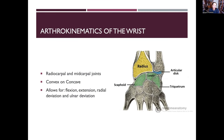The arthrokinematics of the wrist are important for joint mobilization. The carpal bones create a convex surface and the radius and ulna create a concave surface. In open chain — which is almost all upper extremity movements — it's convex on concave. The wrist allows flexion, extension, radial deviation, and ulnar deviation at the radiocarpal and midcarpal joints. Supination and pronation come from the radial-ulnar joints.